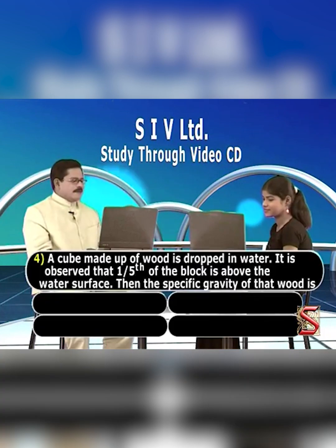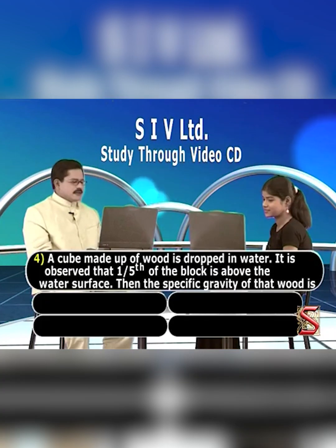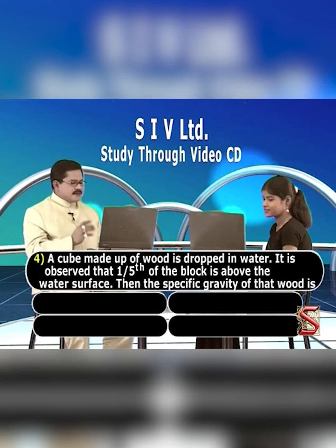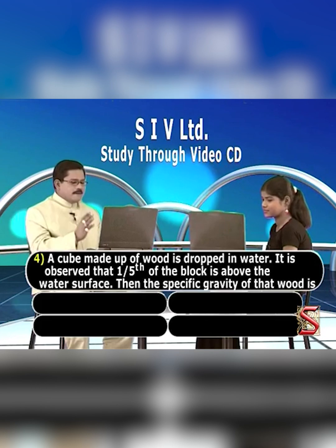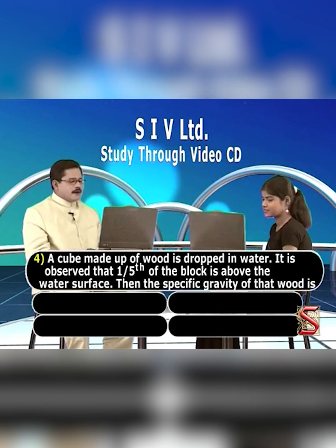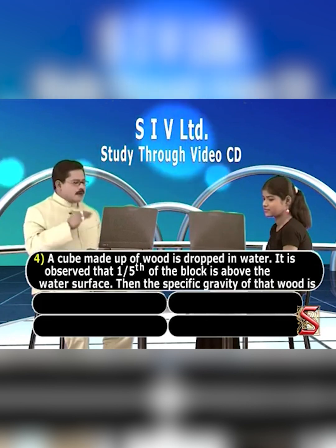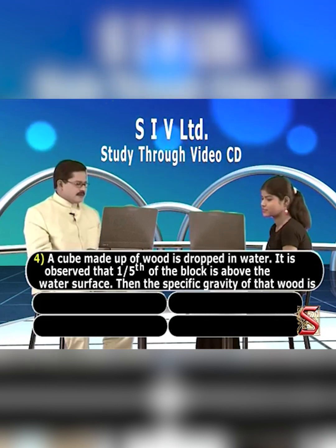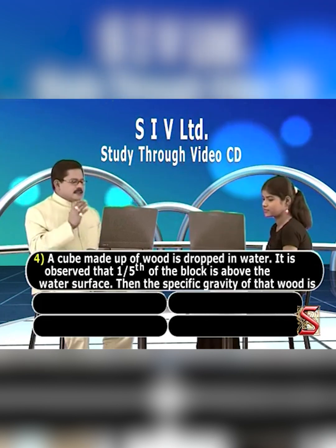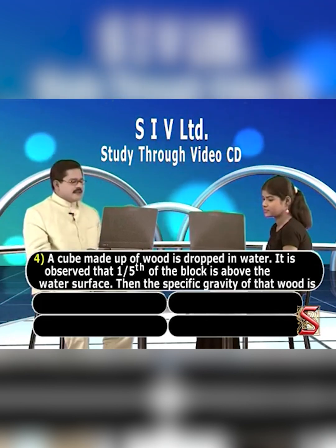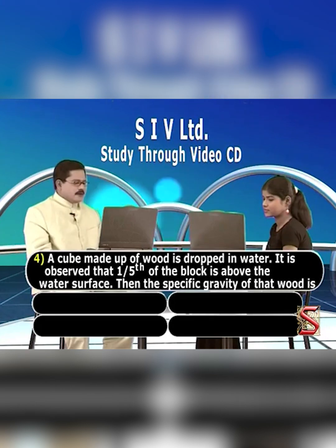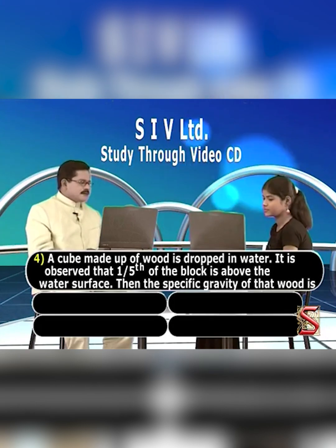A cube made up of wood is dropped in water. It is observed that one-fifth of the block is above the water surface. Then the specific gravity of that wood is — your options: